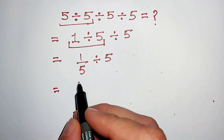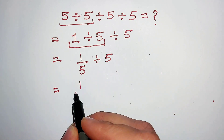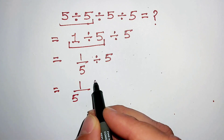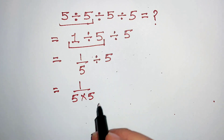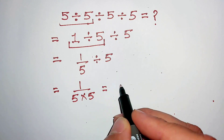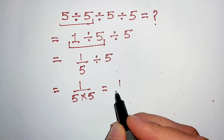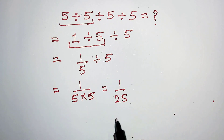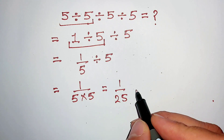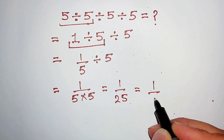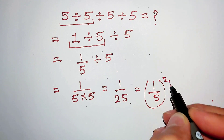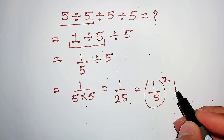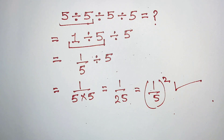1 divided by 5, divided by 5, is equal to 1 over 5 into 5, which is equal to 1 over 25. We can also rewrite this as 1 over 5 squared, and that is our final answer.